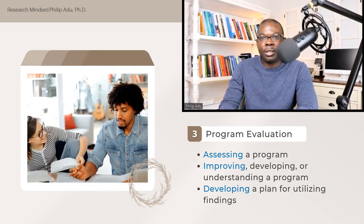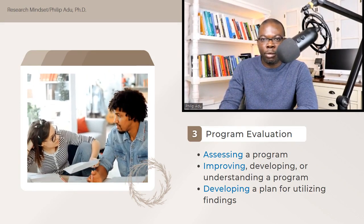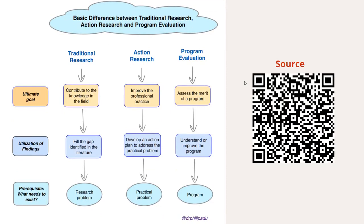These are the main characteristics of the types of research. In summary, the ultimate goal of traditional research is to contribute to the field — you go into the literature, identify a research problem, and do research to address it. For action research, the ultimate goal is to improve professional practice or use the findings to solve a specific problem. For program evaluation, your main purpose is to assess the merits of a specific program, understand it, or help develop it based on the evaluation findings.